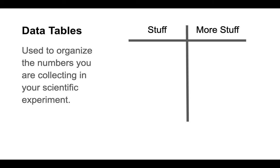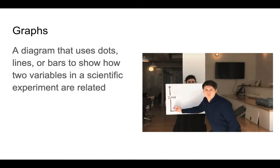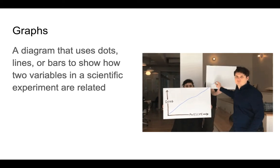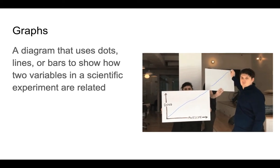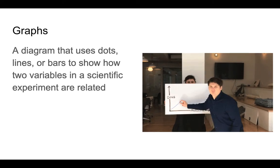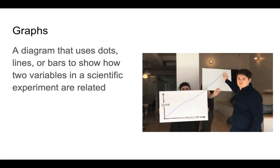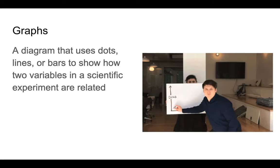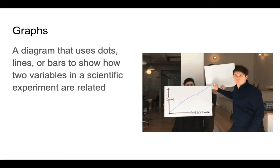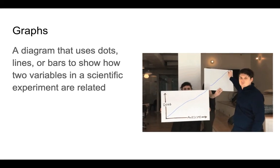First of all, we've got to get our words right. A data table is what we use to organize the numbers we're collecting for our scientific experiment. We have columns, we have rows, we have a whole lot of numbers. But that is not the same as a graph. Graphs are the diagrams — we might use dots, lines, or bars — and what we're doing is showing how two variables in a scientific experiment are related.